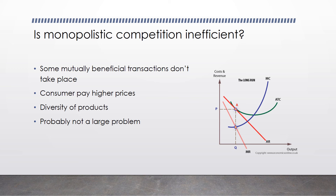On the flip side, we have a large diversity of products because we get so many options and so many different things to choose from. All of the diversity that we get is probably worth the higher prices and the small number of transactions that could have taken place but don't.